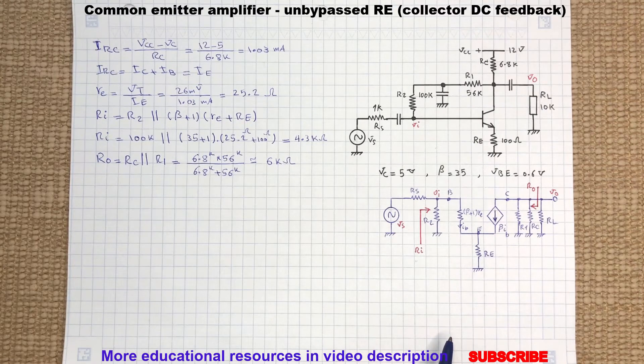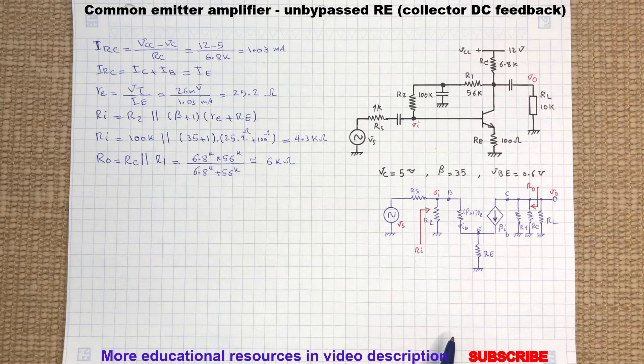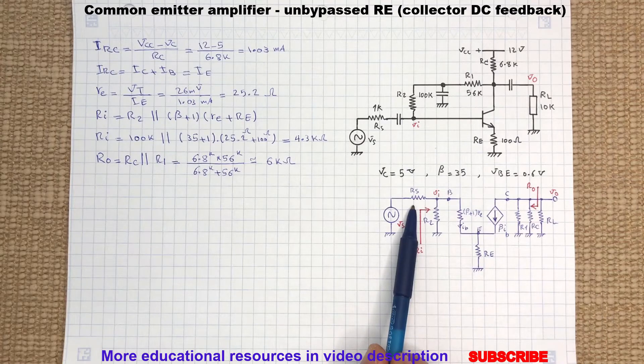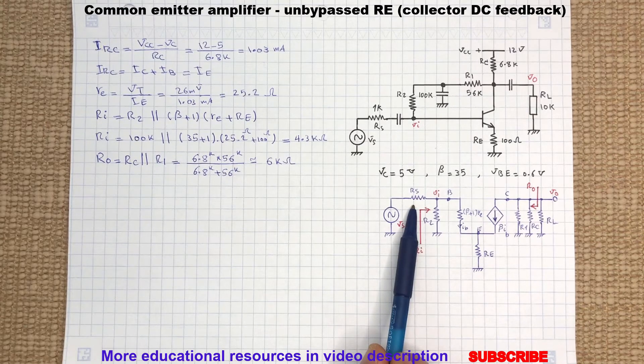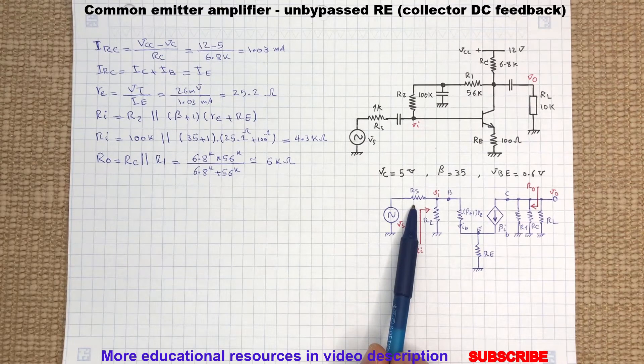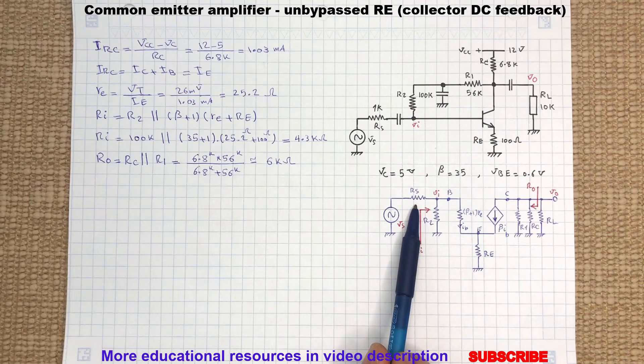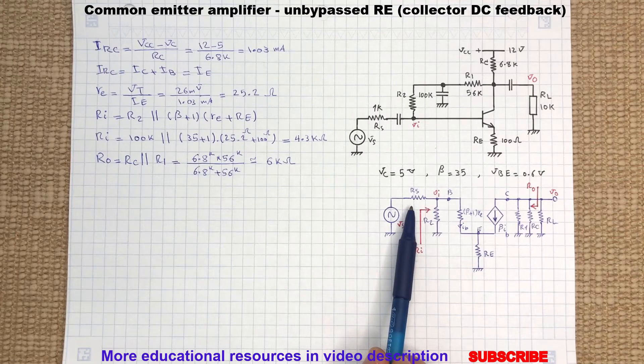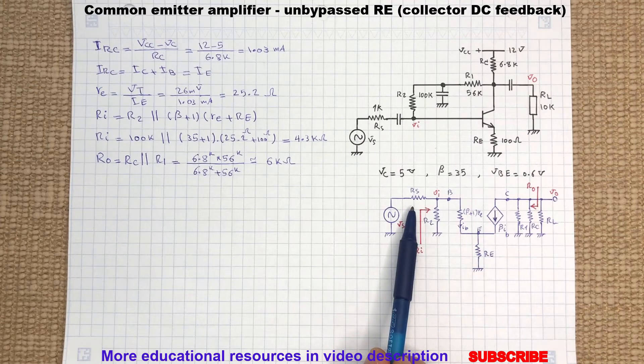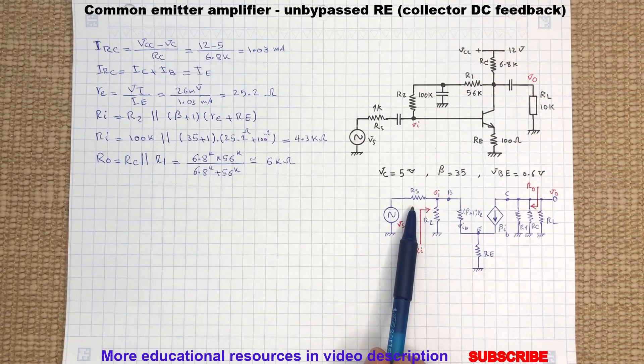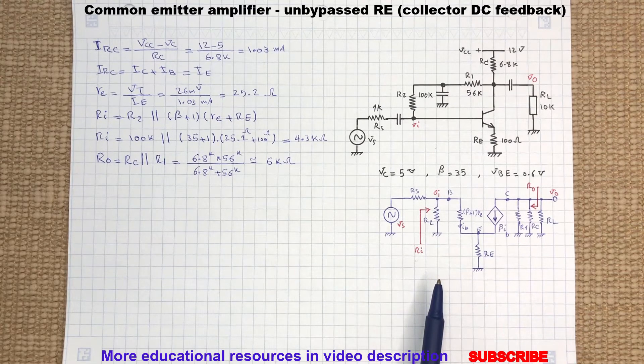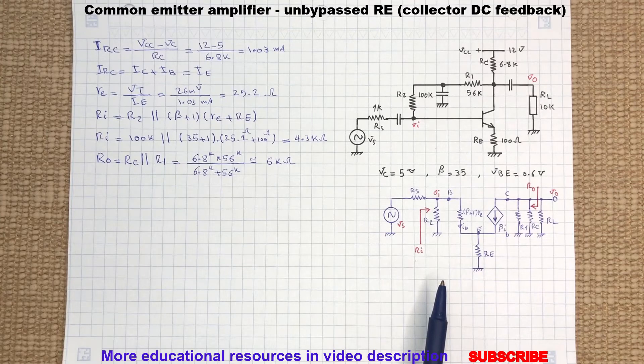Now we look into determining the voltage gain from the load terminal to the source terminal. Here we have to be a bit mindful because of the source resistance RS. As we can see, the RS is in series with the VS and the amplifier input resistance RI. The resistor RS will attenuate the input signal, so it will reduce the circuit overall gain VO to VS. For simplicity we split the overall circuit gain as follows.